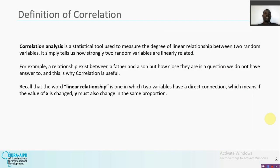Correlation analysis is a statistical tool used to measure the degree of linear relationship between two random variables. It simply tells us how strongly two random variables are linearly related. For example, a linear relationship exists between a father and a son, but how close they are is a question we do not have an answer to — and this is why correlation is useful. Correlation gives you two things: the degree of linear relationship between the two variables, and the direction.